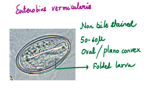Moving on to Enterobius, the pinworm, threadworm, or seat worm. Remember: the eggs are not seen in stool specimens because they are laid by the female worm on the perianal skin. So how do we demonstrate these eggs? By NIH swab or the scotch tape technique. These eggs are non-bile-stained, 50 to 60 microns in size, typical oval or sometimes plano-convex eggs, and you can see a folded larva inside — it is already larvated and infectious to man.